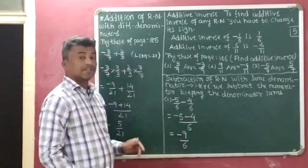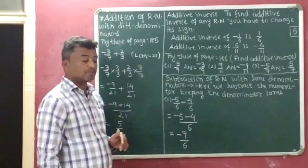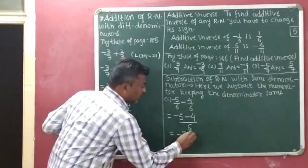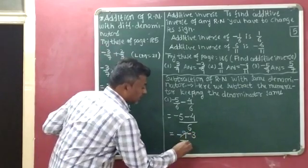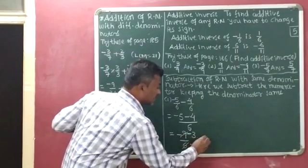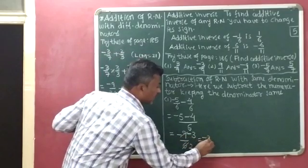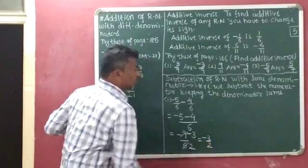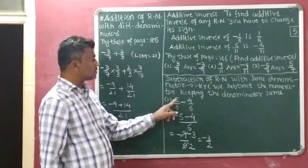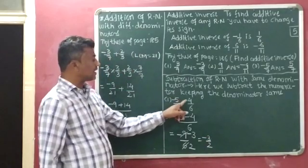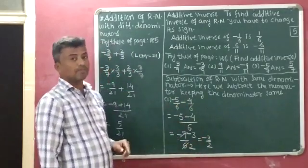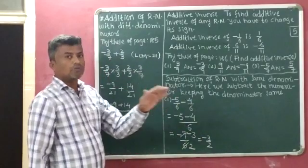Now, minus 9 and 6 can be simplified. 3 times 3 is 9 and 3 times 2 is 6, so the final answer is minus 3 by 2. The subtraction answer of minus 5 by 6 minus 4 by 6 is minus 3 by 2.